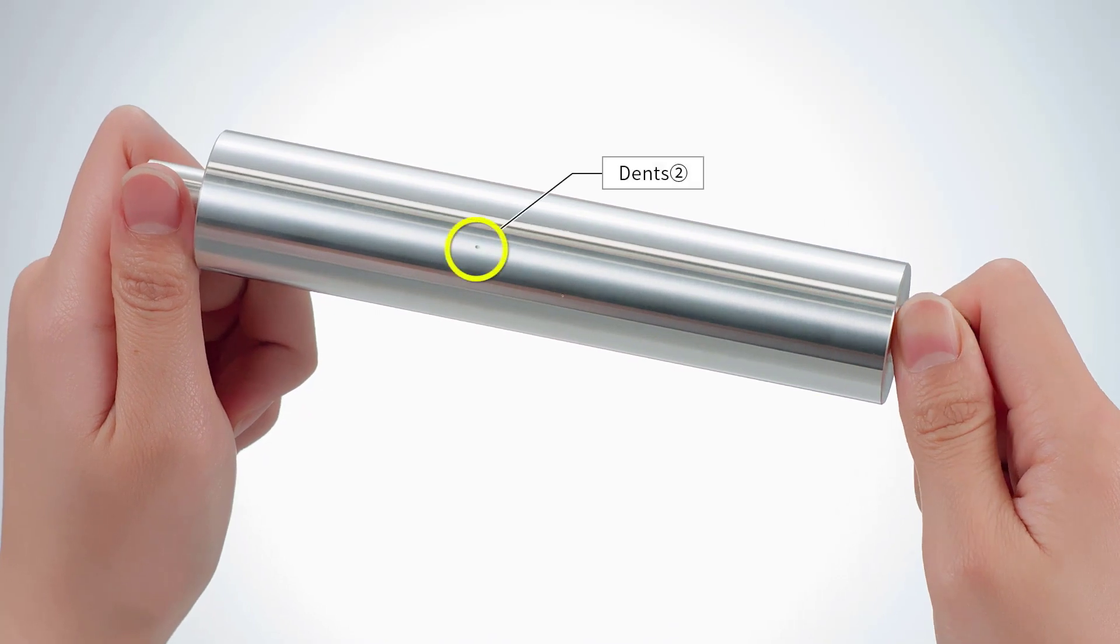Rotating the cylinder more, we see additional dents of varying depths that make this part defective.